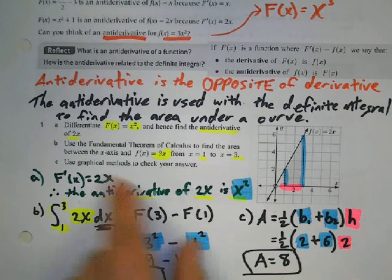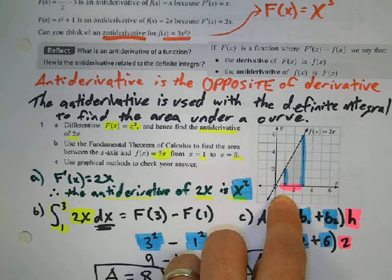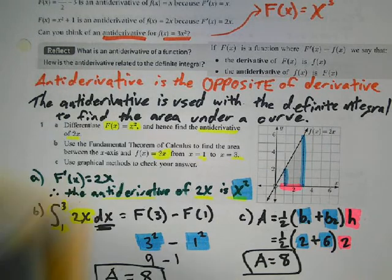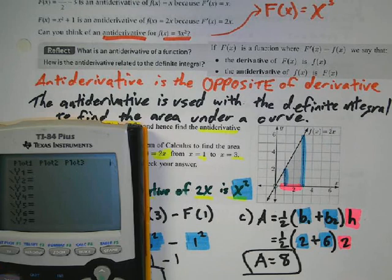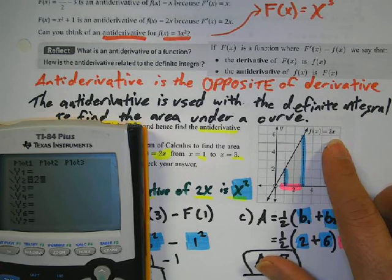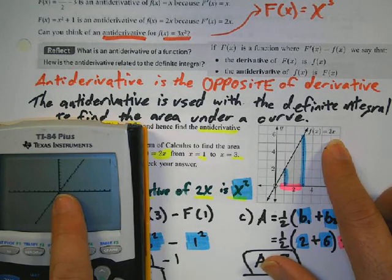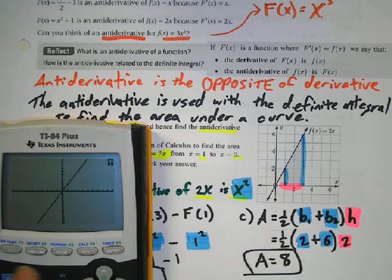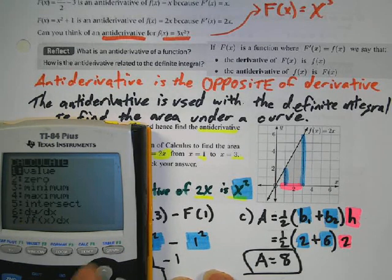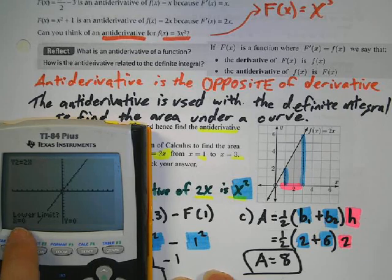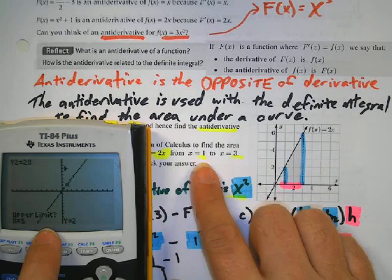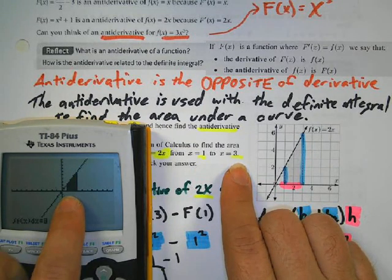We can check this with graphical methods using a trapezoid. The length of one base is 2, the other is 6. We add them and get 8. One half of 8 times 2 gives us 8. We can also check using the calculator: graph the function 2x, press 2nd and trace, calculate the integral, lower bound 1, upper bound 3, and it tells us the area equals 8. So there are 3 ways to figure out the area under this line.